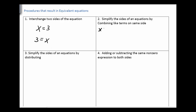We might have something like x plus 2 plus 6 equals 2x plus x plus 1. On the left side, we can combine the 2 and the 6 to get 8. And on the right side, we can combine the 2x and the x to get 3x. As long as they're on the same side of the equation, we can combine them together.